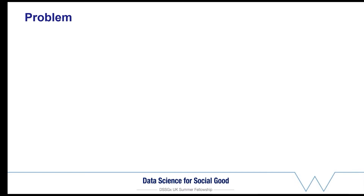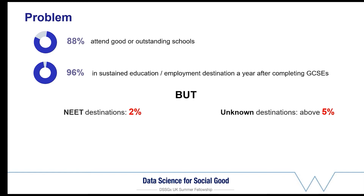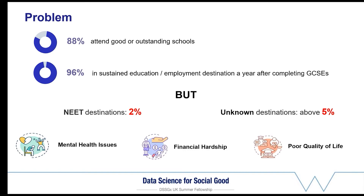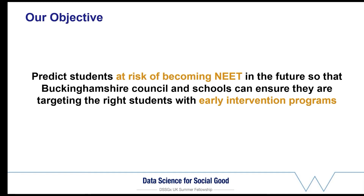Focusing on Buckinghamshire, they came to us with an interesting problem. The county is a fairly affluent county with good schools and high test scores. However, there are a significant number of students who end up NEET or with an unknown status, meaning the council cannot contact the student anymore. Students who become NEET are prone to other issues later in life, such as mental health issues, financial hardship, or general poor quality of life. The big question from the council is: how can we effectively use the data they've collected to identify students who are at high risk of becoming NEET and give them support before that happens?